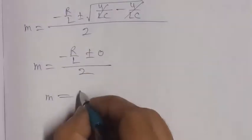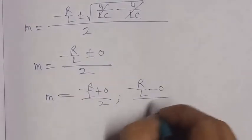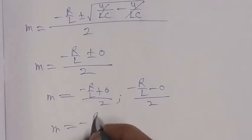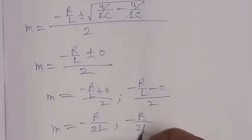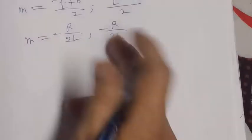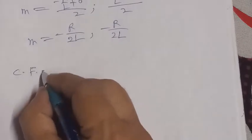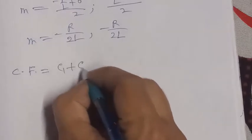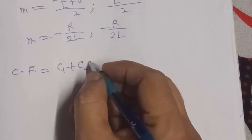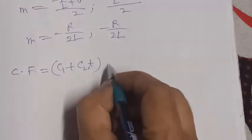Since the discriminant is zero, we get one repeated root: m = −R/(2L). When a root is repeated, both plus and minus give the same value. With a repeated root, the complementary function is written as: CF = (C1 + C2·t)·e^(m·t) = (C1 + C2·t)·e^(−R/(2L)·t).